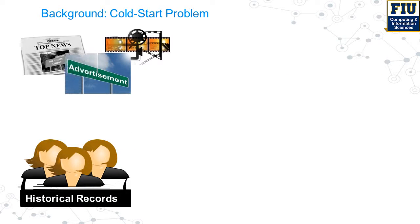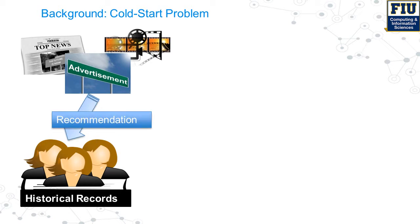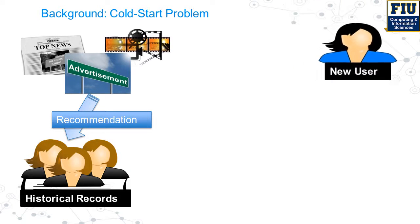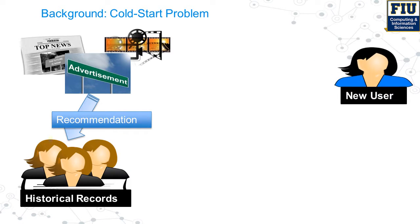Items like news, ads, and movies are recommended to users according to their historical consuming behaviors. But for new users, it is difficult to guess their preference space without any historic data.